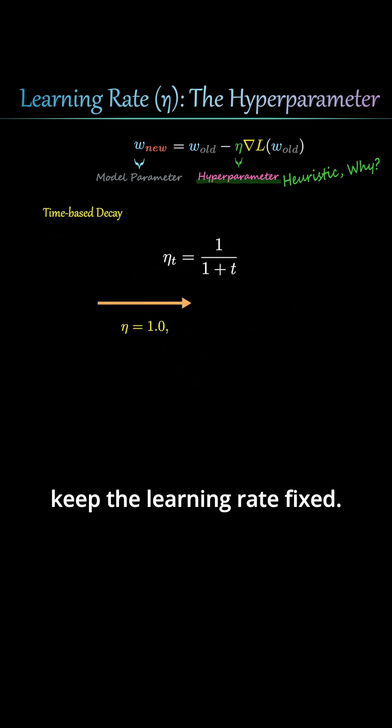There are also methods that don't keep the learning rate fixed. A classical approach is to decrease eta over iterations. One on the first iteration, one half on the second, and so on.